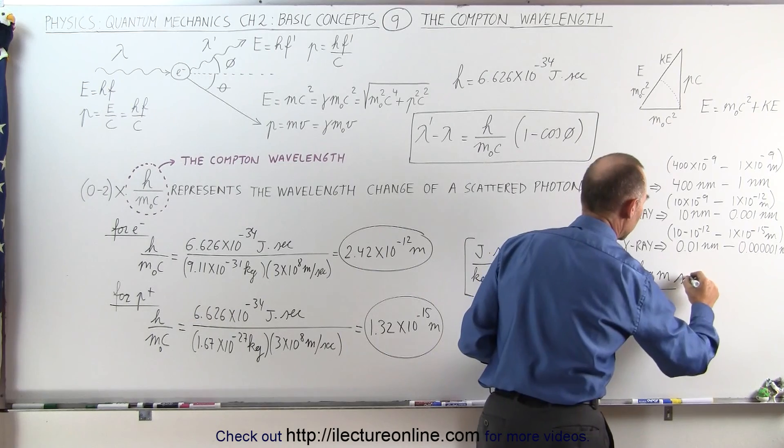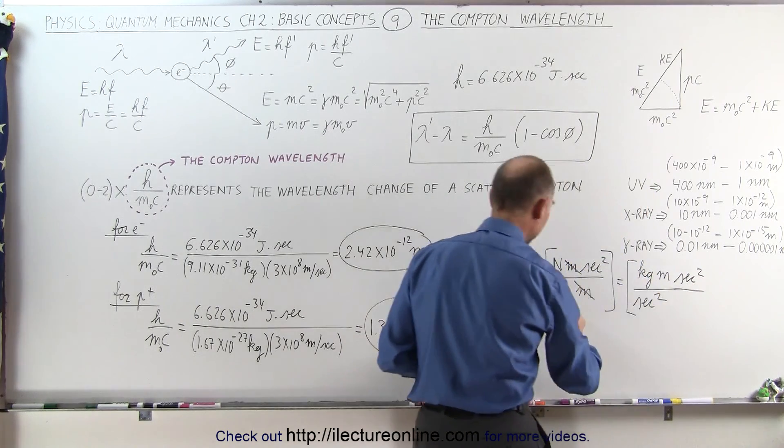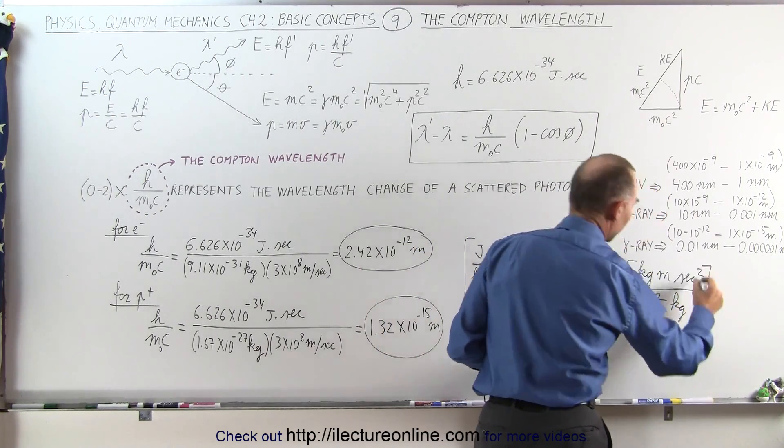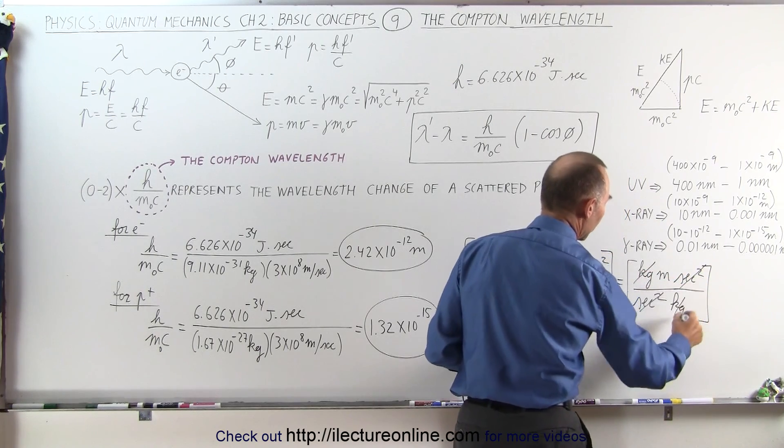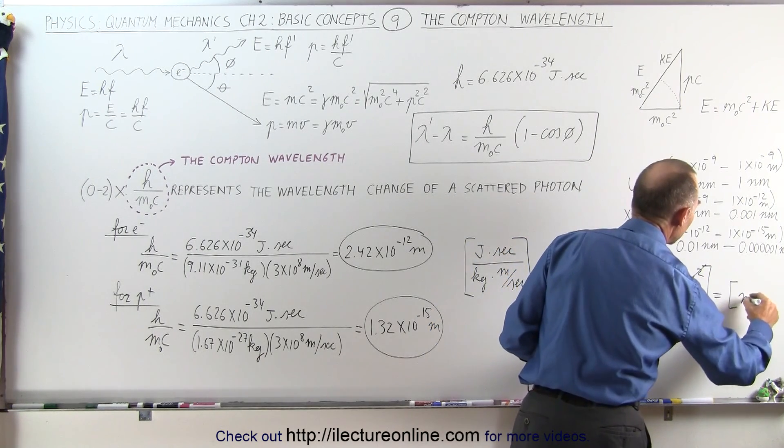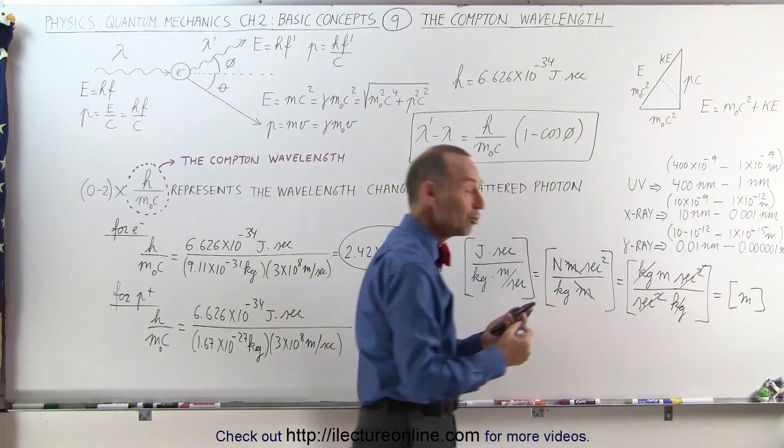Now we have seconds squared in the numerator, and kilograms in the denominator. And then if we cancel these out, and that, we notice we end up indeed with meters, which is the units for wavelength.